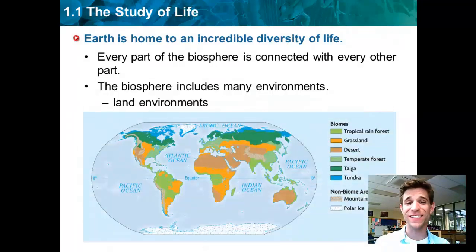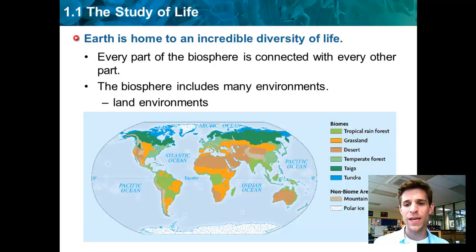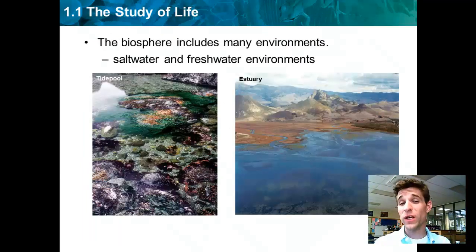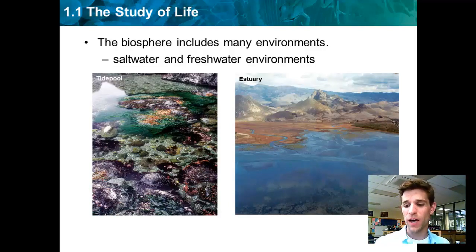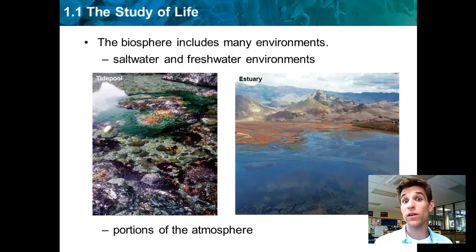An important thing to realize is that every part of the biosphere is connected. Here you can see some of the land ecosystems where you would find living organisms, but they're all connected. The tropical rainforests are connected to grasslands, and the nutrients, chemicals, and even organisms go back and forth between those ecosystems. Don't forget aquatic ecosystems like a tide pool or estuaries where freshwater rivers flow into the ocean. Also, portions of the atmosphere are important parts of ecosystems — birds, bats, insects fly in the air, and bacteria are suspended in the air at all times. So part of the atmosphere is also part of the biosphere.